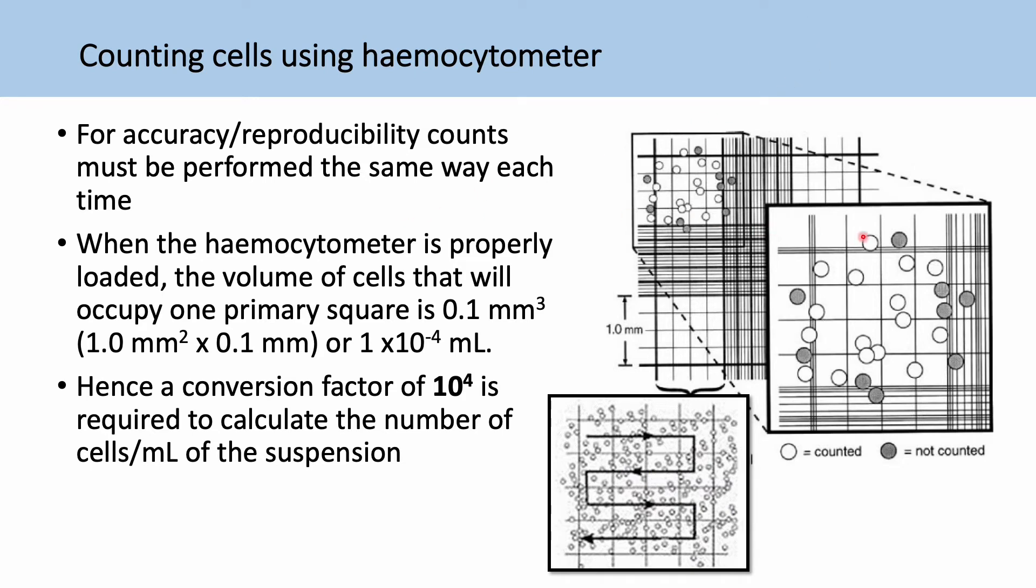So the way the hemocytometer works is the amount of space between the glass slide and the coverslip means that the volume of cells within the squares will be 1 by 10 to the power of minus 4 mils. So then we need a conversion factor of 10 to the power of 4 when we are calculating how much we have in our actual full suspension.